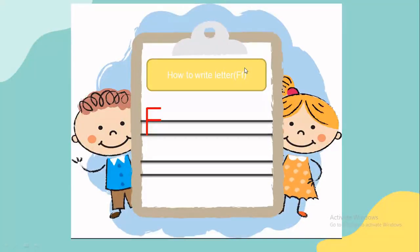Again, how to write capital F: down stick, sleepy line, and sleepy line.